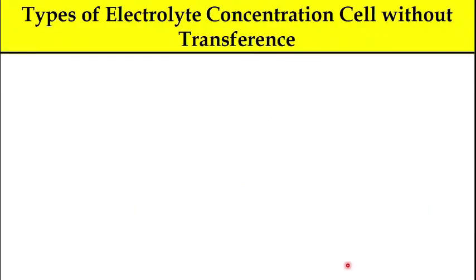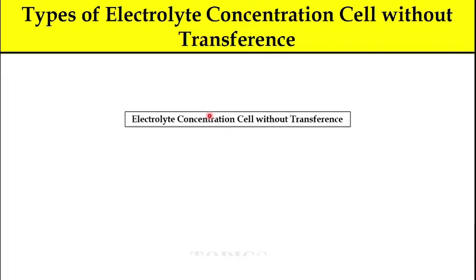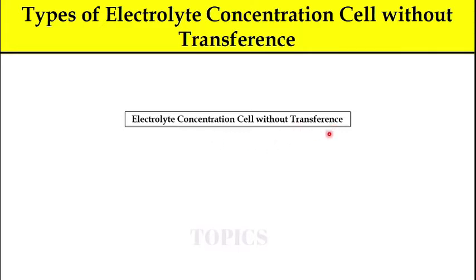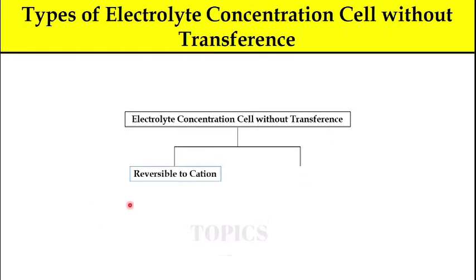Now see the first slide: types of electrolyte concentration cell without transference. If you are new to this channel, see my last lectures on concentration cells, where I discussed different types. Concentration cells are of two types: electrode concentration cell and electrolyte concentration cell. Electrolyte concentration cells are of two types: with transference and without transference. The without-transference type is further divided into reversible to cation and reversible to anion.